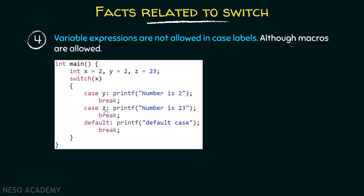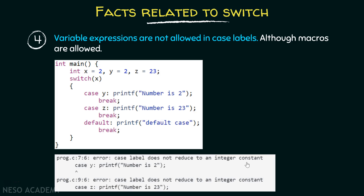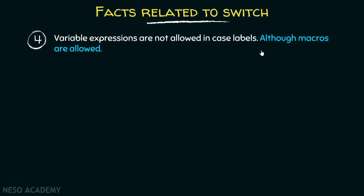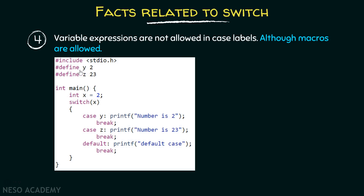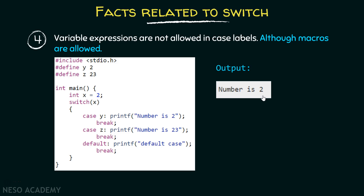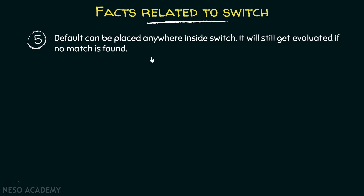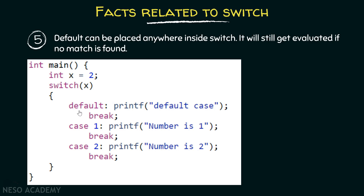Fact number four: variable expressions are not allowed in case labels. For example, here I have declared variables x, y, and z, and two of the case labels are y and z. Since these are variables, and variable expressions are not allowed in case labels, this program will produce an error: 'case label does not produce an integer constant.' Although, macros are allowed. For example, if you define macros y and z and use them as case labels, those are not variables — they are macros. They are allowed, so this program will produce the correct output: 'number is 2.'